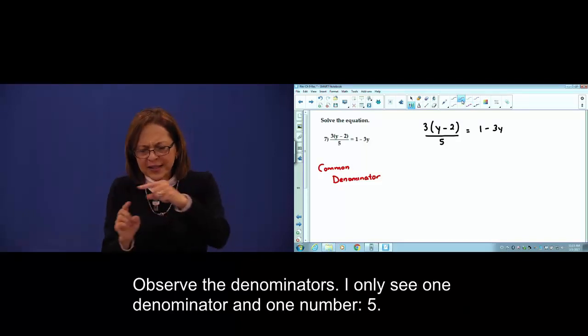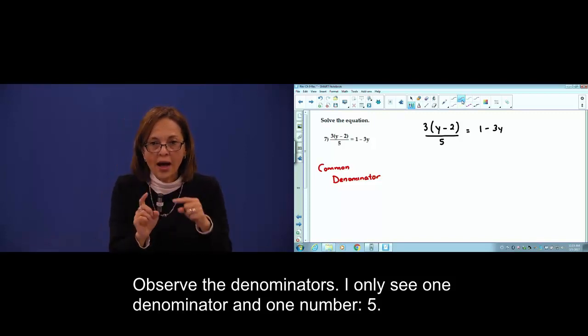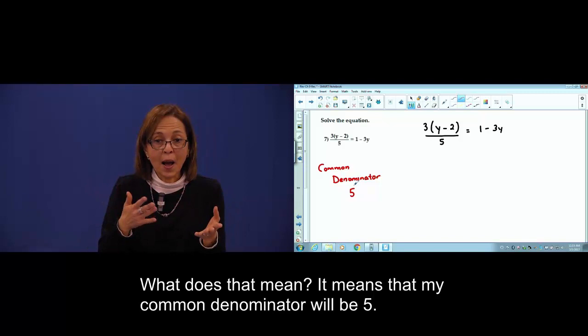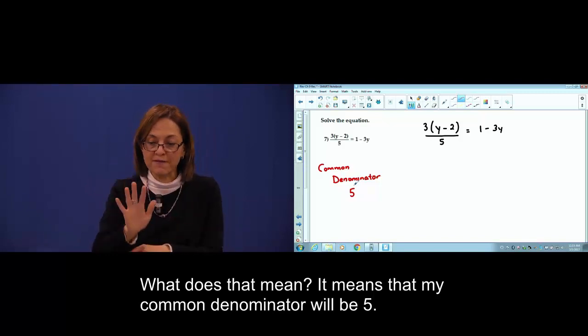Observe the denominators. I see only one denominator and only one number, 5. What does that mean? It means that my common denominator will be 5.